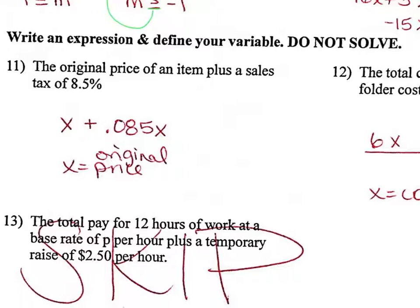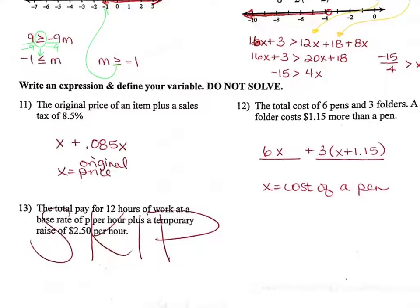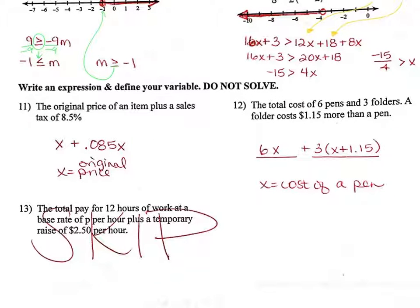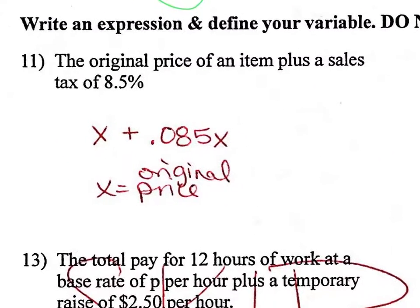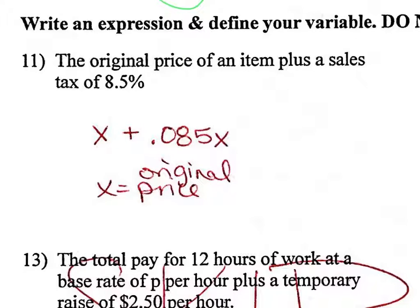Let's dig into some word problems. There are two types: either multiple things come together to make a total — blank plus blank equals a total — or two things are set equal to each other. You need to know your key words. Question 11: the original price of an item plus the sales tax of 8.5%. X is the original price. For sales tax, move the decimal twice to get 0.085, and percents mean multiplication, so that's 0.085x.